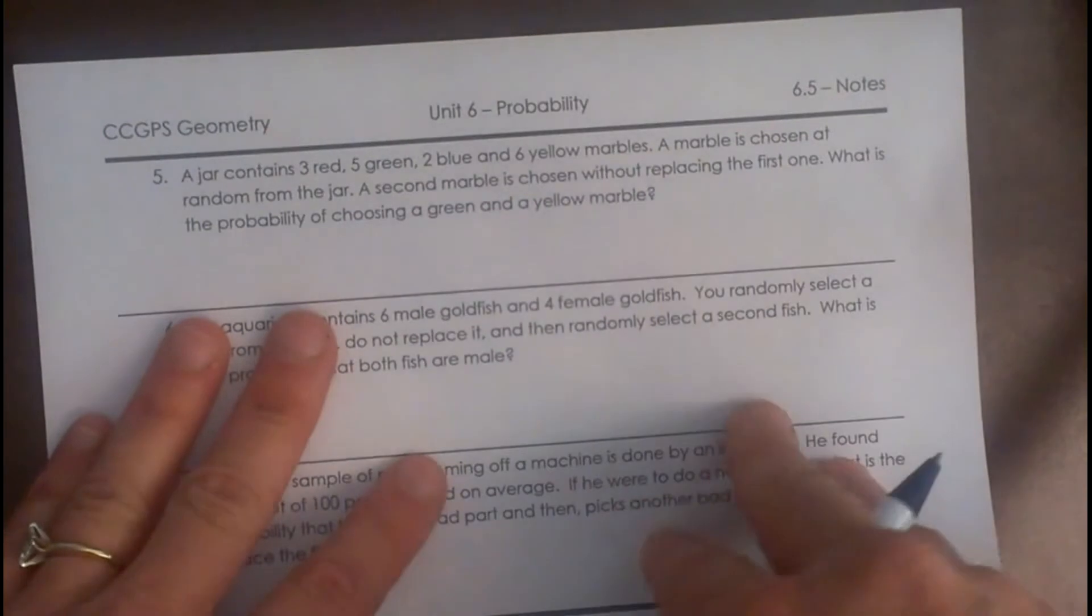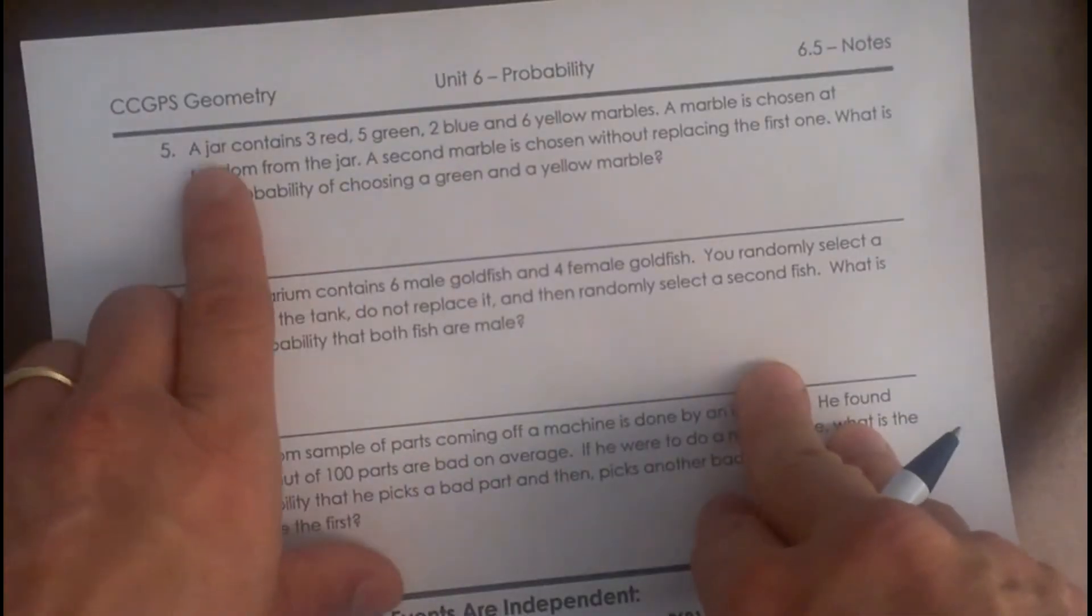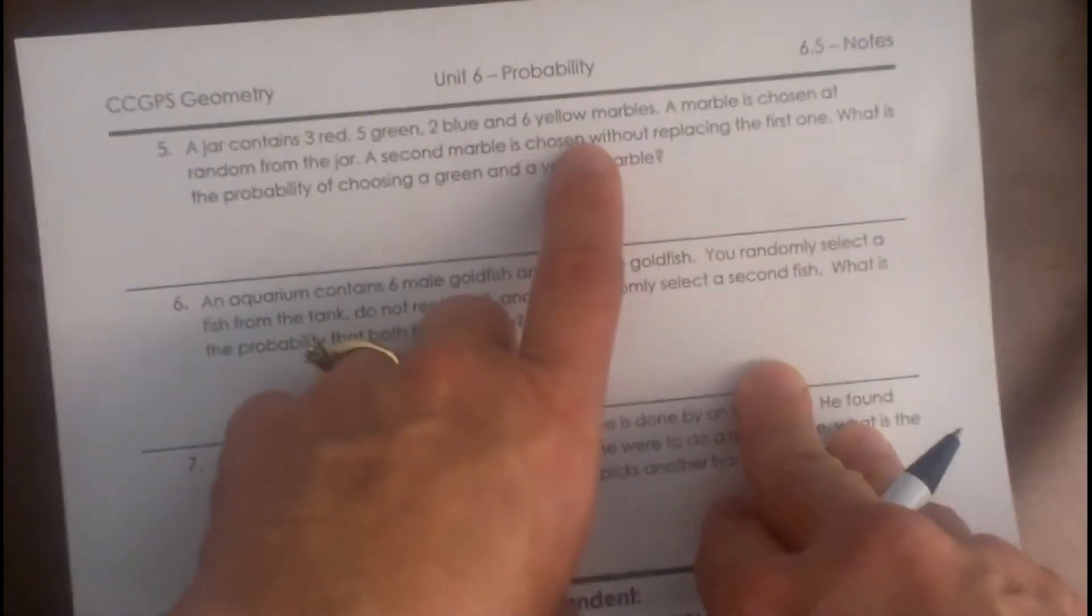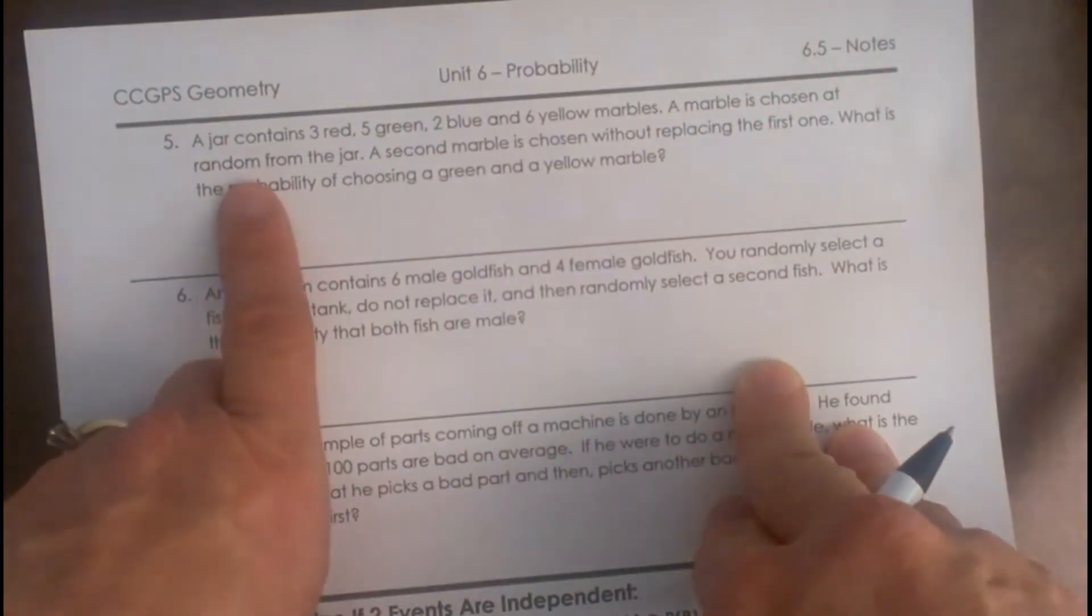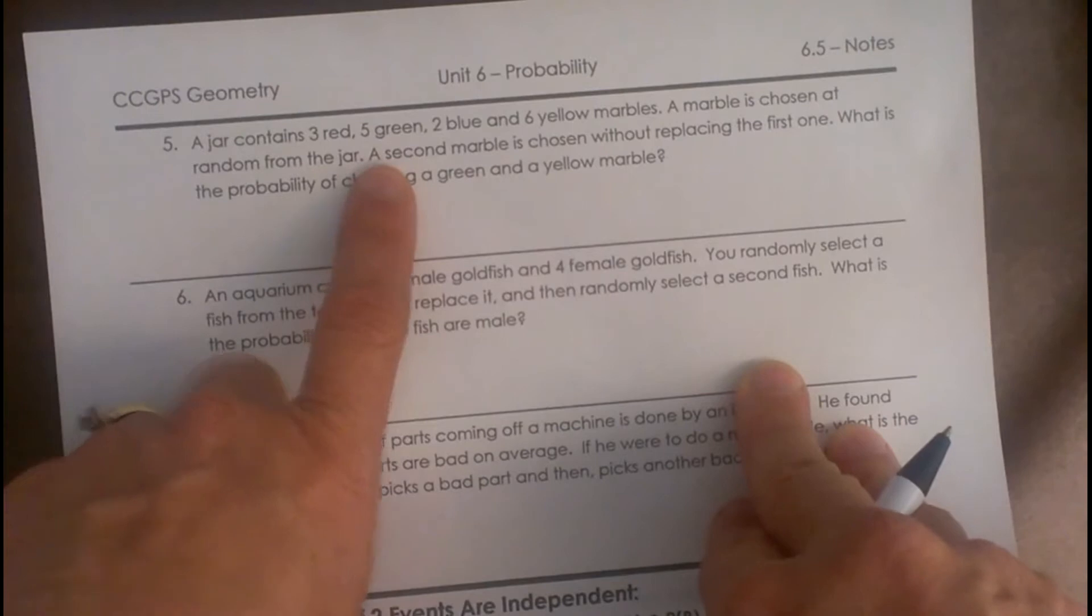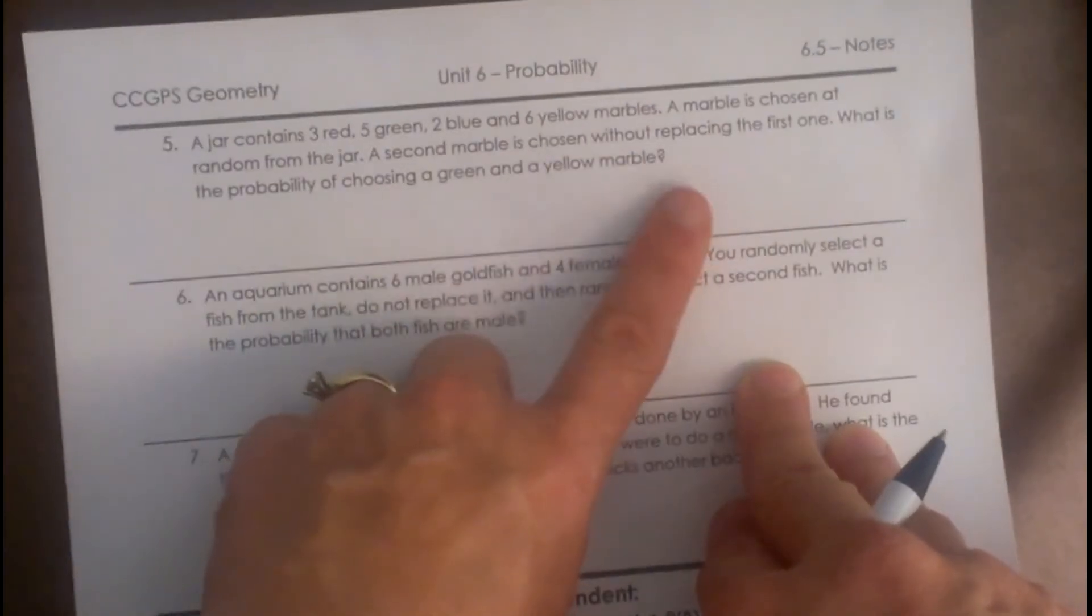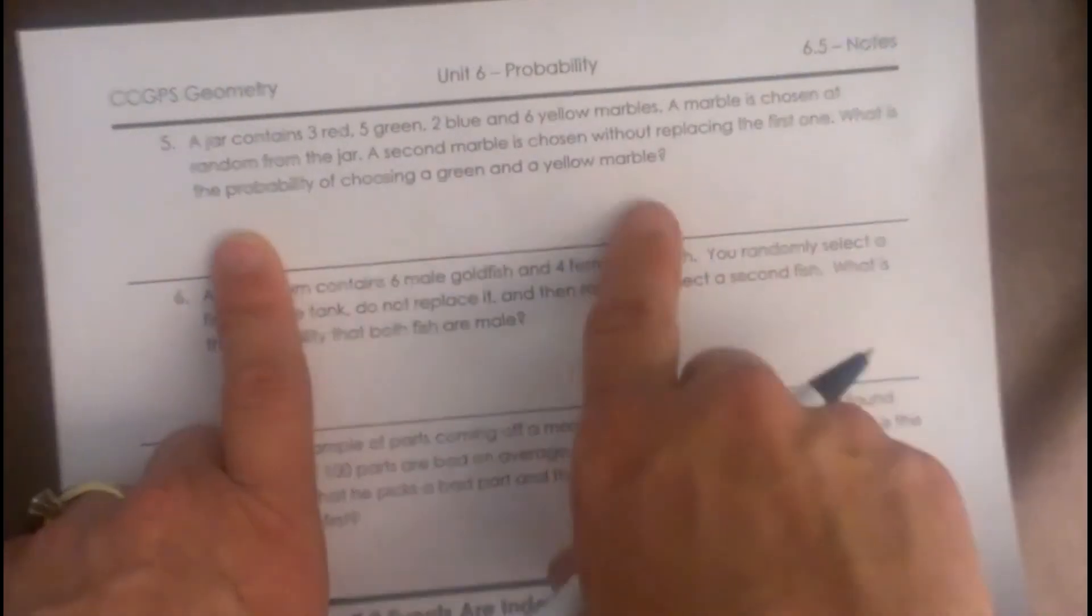Once you do a few of these they will make more sense. A jar has the same marbles: 3 red, 5 green, 2 blue, and 6 yellow. A marble is chosen at random from the jar. The second marble is chosen without replacement, so it changes. What is the probability that you get a green and a yellow?